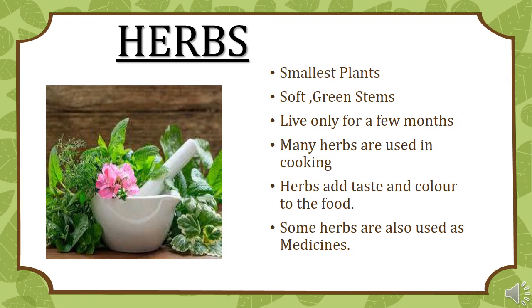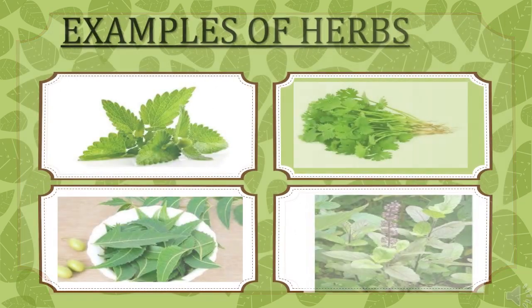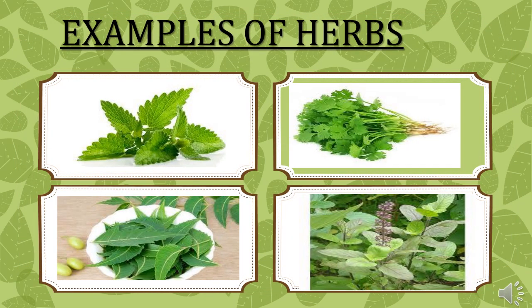Herbs are the smallest plants. They have soft and green stems. They live only for a few months. Many herbs are used in cooking — herbs add taste and color to the food. Some herbs are also used as medicines. Examples of herbs include mint leaves, coriander leaves, neem and tulsi.